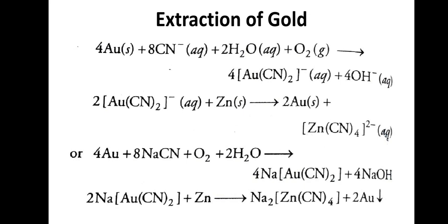Now, extraction of gold. The reaction is: 4Au(s) + 8CN⁻(aq) + 2H₂O(aq) + O₂(g) → 4[Au(CN)₂]⁻(aq) + 4OH⁻(aq). Then [Au(CN)₂]⁻ is reduced using zinc: 2[Au(CN)₂]⁻(aq) + Zn → 2Au(s) + [Zn(CN)₄]²⁻(aq). This is how gold is extracted using the cyanide process.